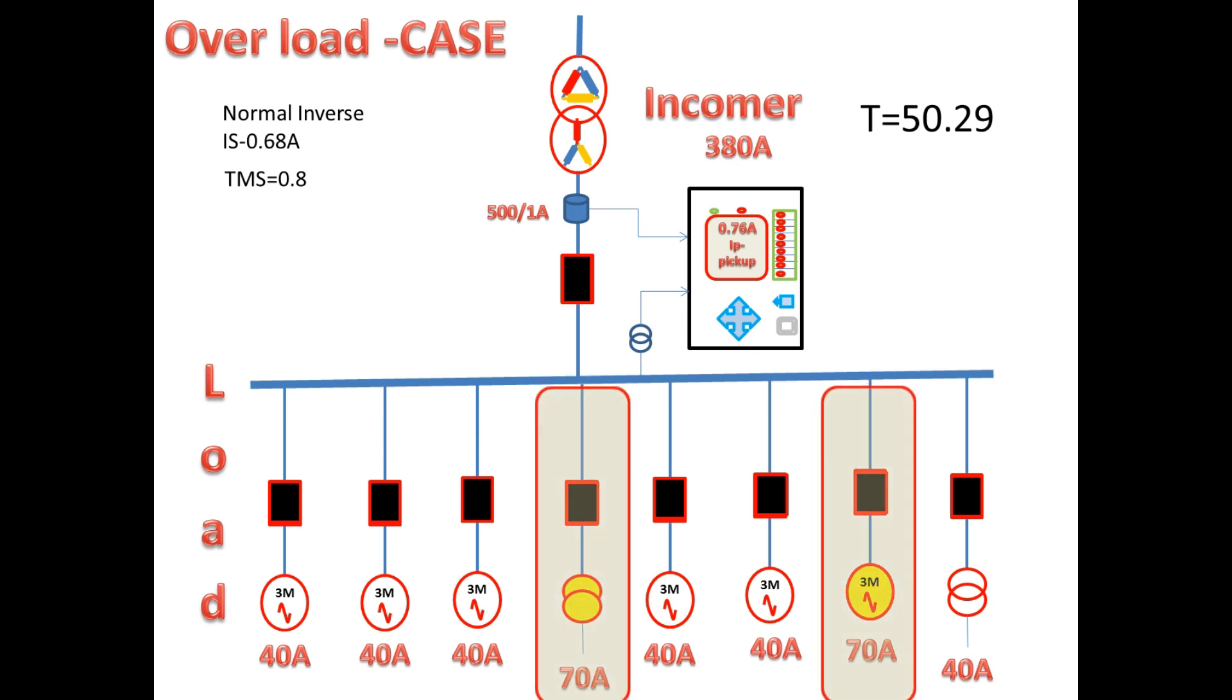In this case, if the feeders get normal or if these two feeders get tripped by their own CB before 50.29 seconds, then the incomer still continues to serve and remaining healthy feeders will get supply. Because since it has high tripping time, this transformer and motor can become normal or its breaker can be tripped due to thermal protection.